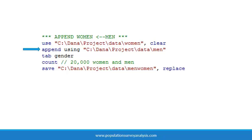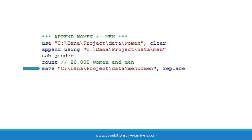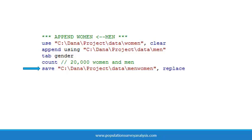With the master dataset open, type append using and the path name to the men dataset in quotes. We check that the data appended correctly by tabulating the variable gender. We see that the file contains 6,329 men and 13,671 women, as expected. Then we save a new permanent dataset in our project data folder called men-women.